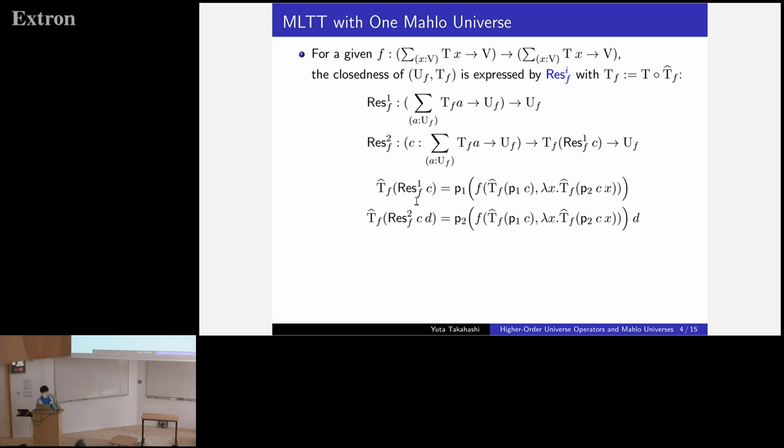Let me explain this closeness. For a given operator F on families of sets in V, the closeness of this family is expressed by the constructors for UF, namely LESSF. The types and computation rules for LESSF are as follows, but let me explain informally. First, consider a family of sets in UF, AB. Then, LESSF maps this family to another family because LESSF is the restriction of F to UF.